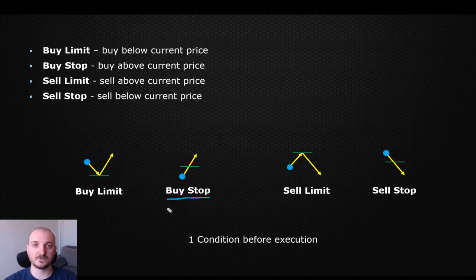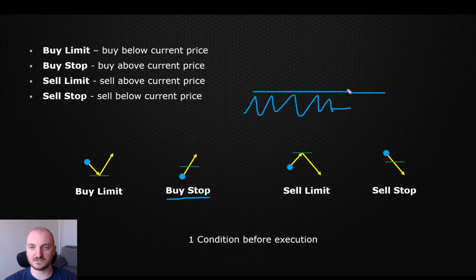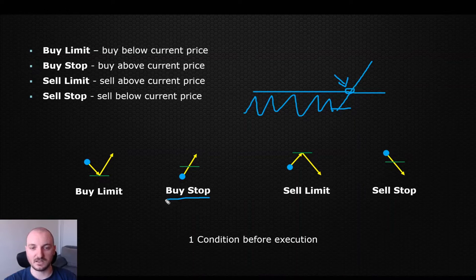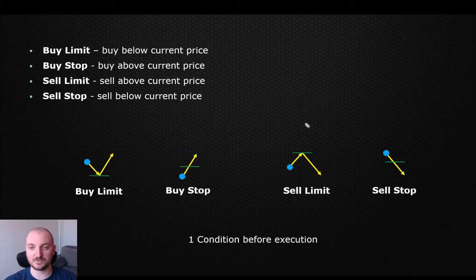Buy stop, on the other hand, is very useful when it comes to breakouts. Let's say you have a range — current price is here — and you're looking for a breakout above this range. If the price crosses this level, you'd like to buy it exactly there, and this is where the buy stop order comes into play. Then we have sell limit and sell stop, which are pretty similar situations, just vice versa.